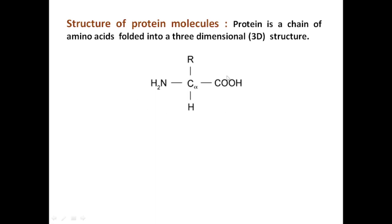One amino group, one carboxyl group, one hydrogen atom, and a side chain group. This side chain group is the variable component of the amino acid and it distinguishes one amino acid from another. It can be as simple as a single hydrogen atom or it can be a complex structure. This amino group and carboxyl group are always present in all amino acids, while the side chain varies in structure, giving each amino acid its unique properties.